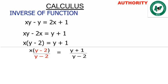So we have x open bracket y minus 2 close bracket divided by y minus 2 equals y plus 1 divided by y minus 2. The y minus 2 in the numerator cancels the y minus 2 in the denominator, so we have x equals y plus 1 all over y minus 2.